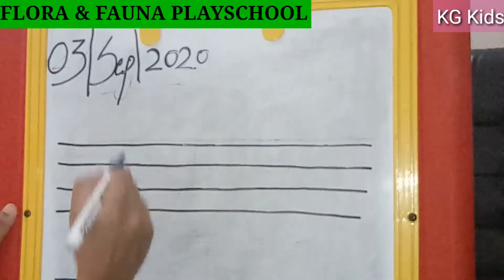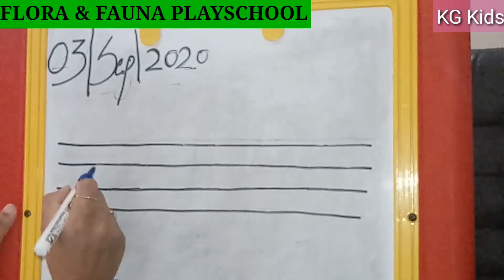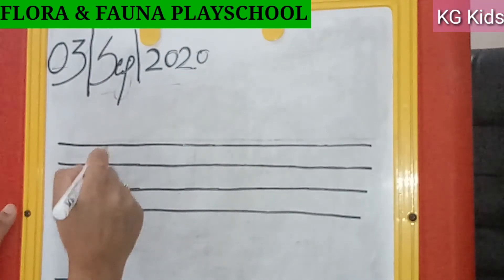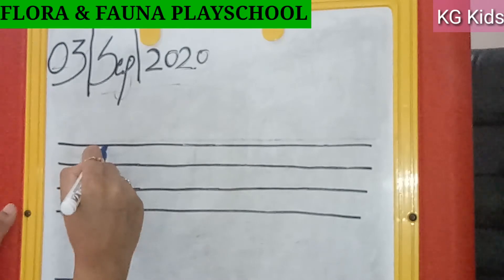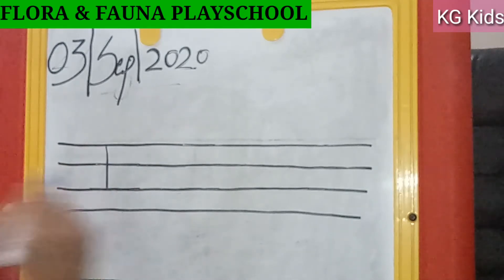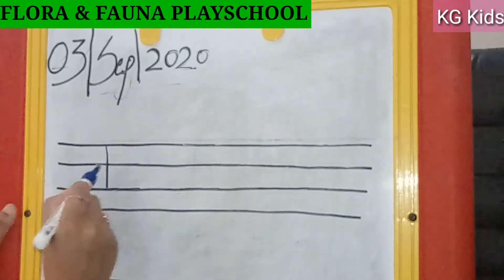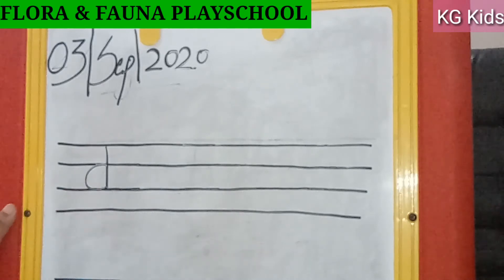So let's begin. Today we will write small D — standing line and semi-circle.